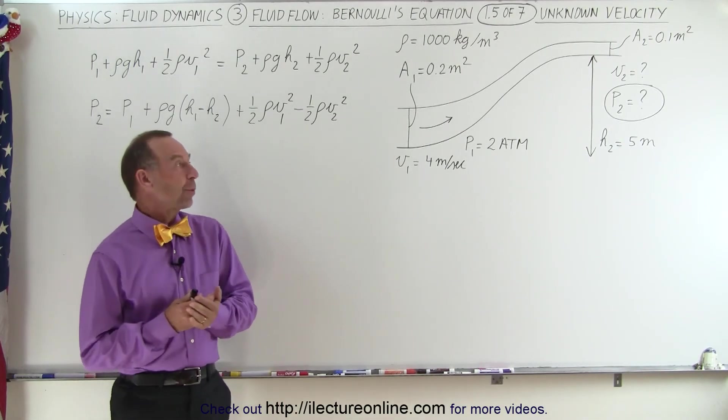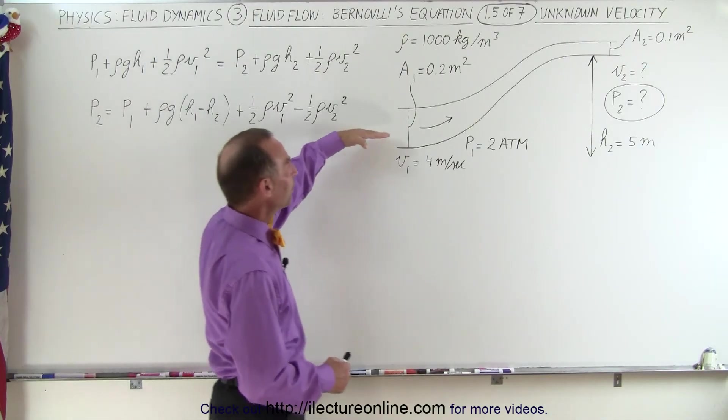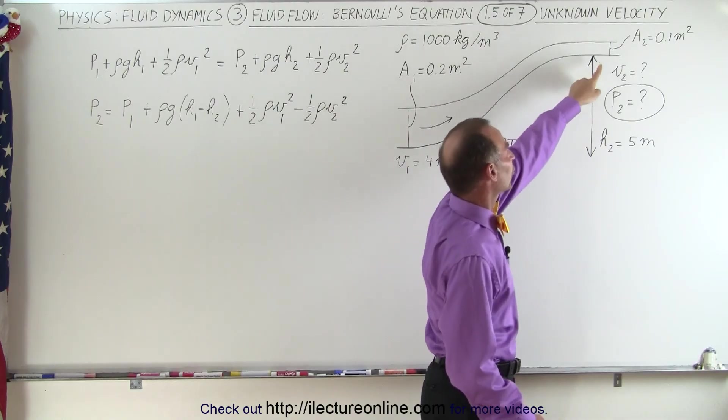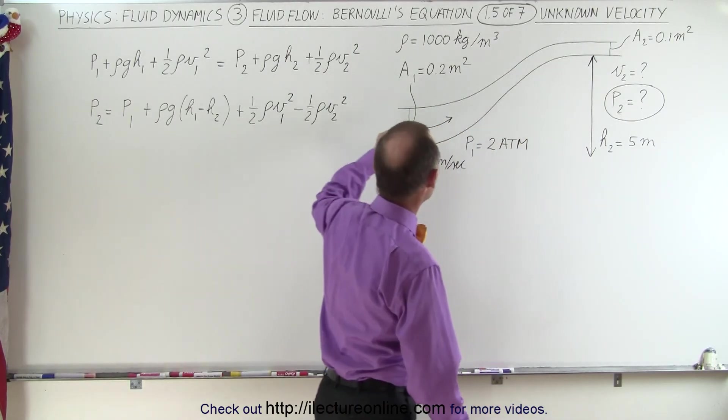In this particular example, we have fluid flowing through a pipe. Not only does the pipe gain height, but the pipe also becomes narrower, has a smaller cross-section here than it has over here.